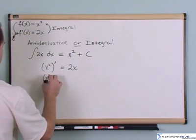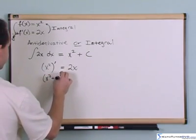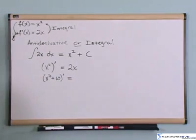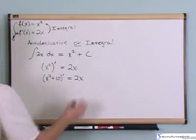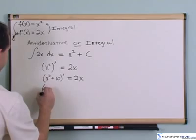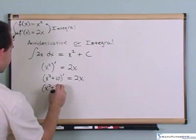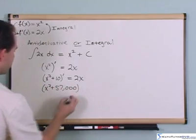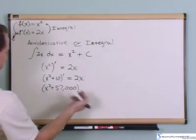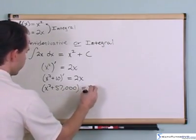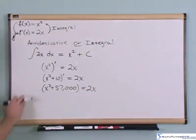So the derivative of x squared is 2x. Now, looky here. The derivative of x squared plus 10, what's this equal to? Well, it's equal to 2x. What is the derivative of x squared plus 57,000? Well, again, this is a constant, so it goes away. So every time I take the derivative of this function here, which we're saying kind of is the answer, I get the same thing back, 2x in all cases.